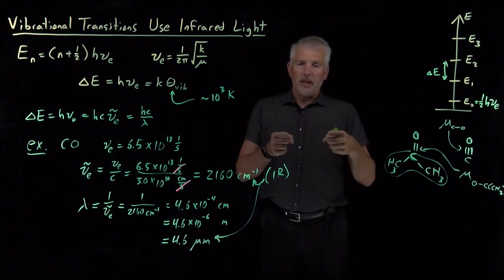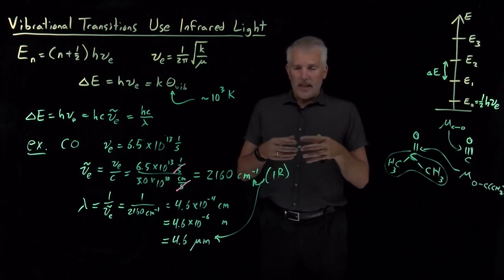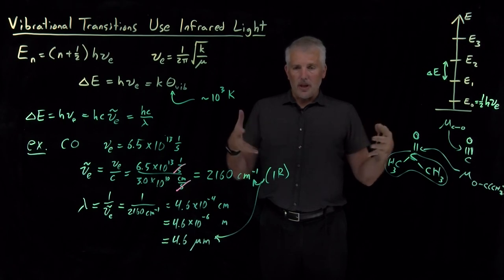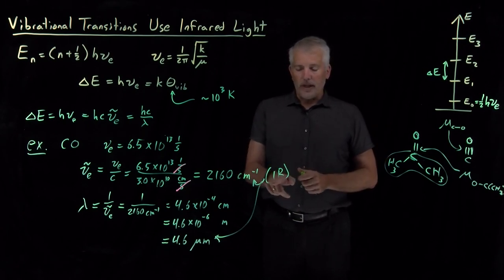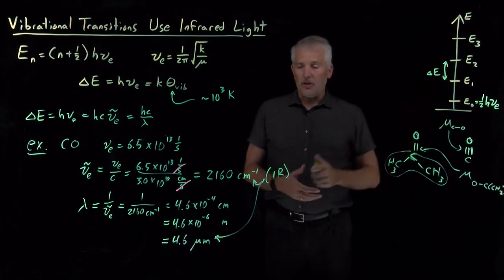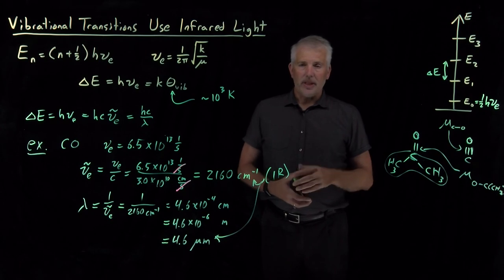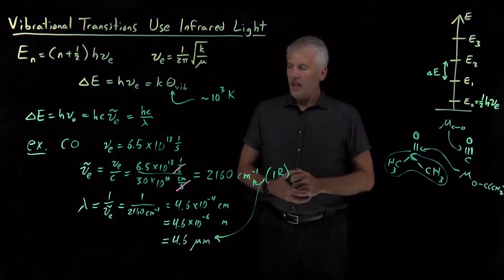As those bonds vibrate, they cause lots of collisions within the material, and then that heat turns into energy that's stored in other portions of the molecule. So, that infrared energy gets converted first to vibrational energy and then to other forms of energy within the molecule. So, that's how infrared energy is used to heat molecules up.